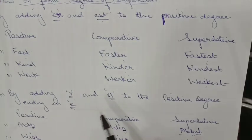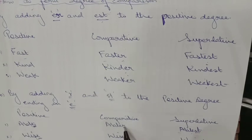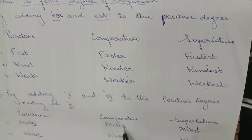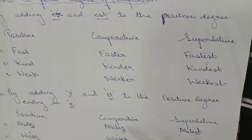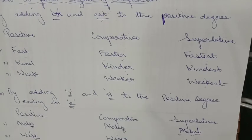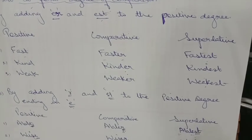Rule two: by adding R and S-T to the positive degree when the word ends with E. You simply add R for the comparative and S-T for the superlative. For example: 'able' becomes 'abler' and 'ablest'; 'wise' becomes 'wiser' and 'wisest'; 'white' becomes 'whiter' and 'whitest'.